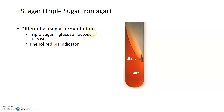One additional type of media that is not selective but is differential is triple sugar iron agar, or TSI agar. TSI agar can differentiate between bacteria in several ways. The first is what type of sugar fermenter a bacterium is. By using three different sugars — glucose, lactose, and sucrose — as well as a phenol red pH indicator, TSI can distinguish between fermenters of glucose, fermenters of lactose and sucrose, and non-fermenters. TSI tests are conducted in what's called a slant.